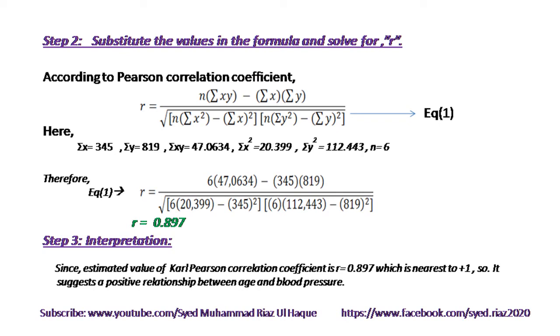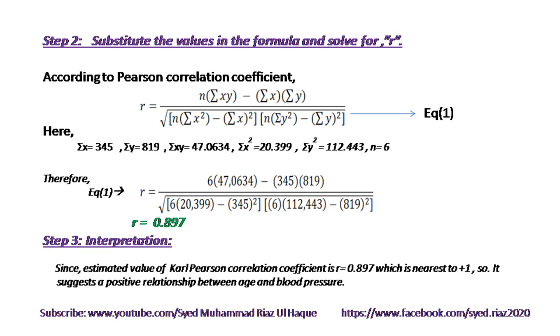Substituting into the formula: r = [6(47,634) − (345)(819)] divided by the square root of the two bracket expressions. You calculate in two or three steps using a calculator and find that r = 0.897. Interpretation: since the estimated value of the Carl Pearson correlation coefficient r = 0.897 is nearest to +1, it suggests a strong positive relationship between age and blood pressure.